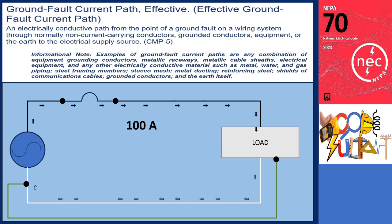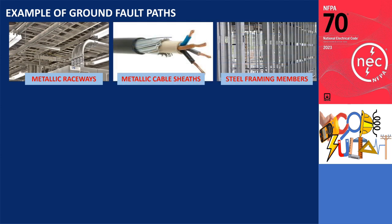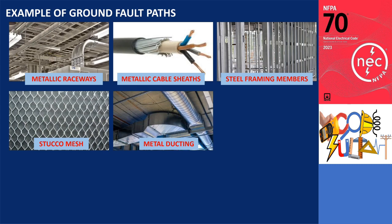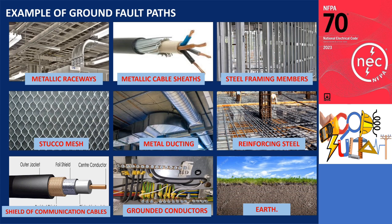The effective ground fault current path is defined as an electrically conductive path from the point of a ground fault on a wiring system through normally non-current carrying conductors, grounded conductors, equipment, or the Earth to the electrical supply source. Going back to the previous circuit with 100 amps, the green line is a ground fault current path, if this is made of conductors, metallic raceways, metallic cable sheaths, electrical equipment, and any other electrically conductive material such as metal, water, and gas piping, steel framing members, stucco mesh, metal ducting, reinforcing steel, shields of communications cables, grounded conductors, and the Earth itself. This equipment grounding conductor is an effective ground fault path.